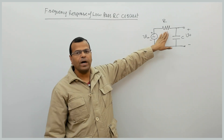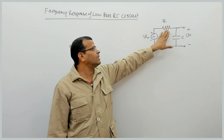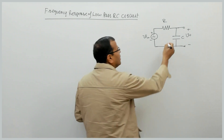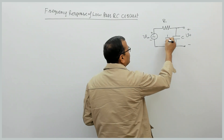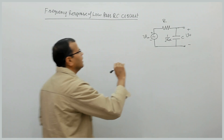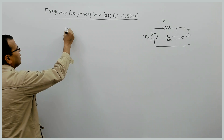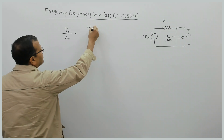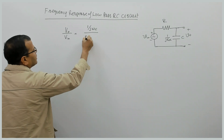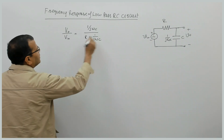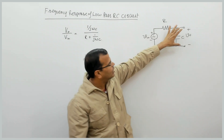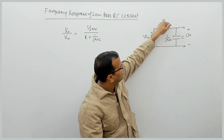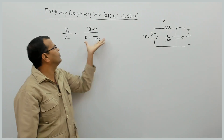This is a simple low pass RC circuit. Let us study the behavior of this circuit. In the frequency domain, the impedance or reactance of the capacitor is 1/(jωC). The ratio of output to input voltage will be the reactance of the capacitor divided by the sum of the two impedances. This is the voltage transfer function of this circuit.